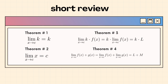Theorem number 1 is where the limit of the function is the constant itself. Theorem number 2 says that the limit of x as x approaches to c is equal to c. Theorem number 3 says that the limit of k times f of x as x approaches to c is equal to k times the limit of f of x as x approaches to c.